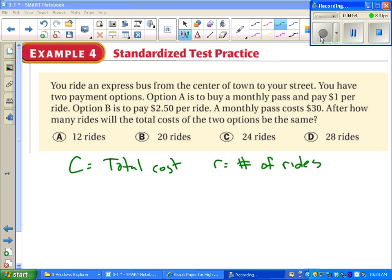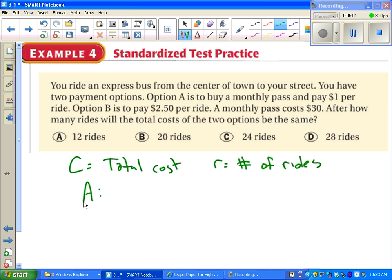Using option A, looks like our total cost was a monthly pass and pay a dollar per ride. So our total cost would be the monthly pass, which it tells us is $30, plus $1 per ride.